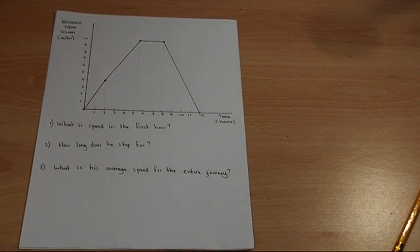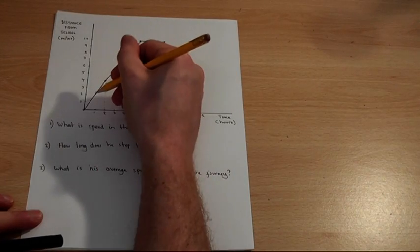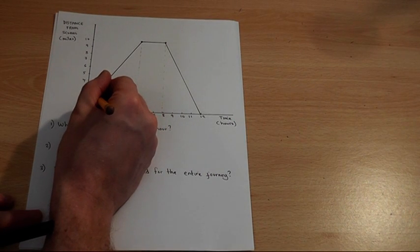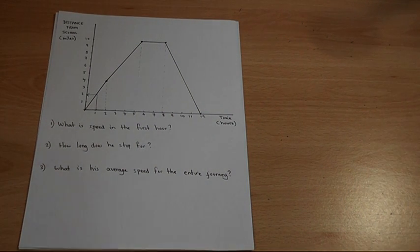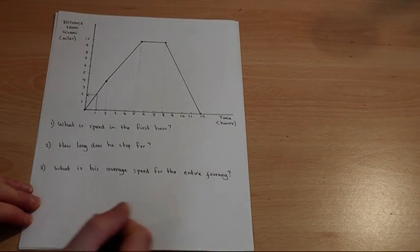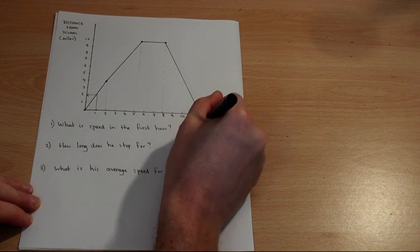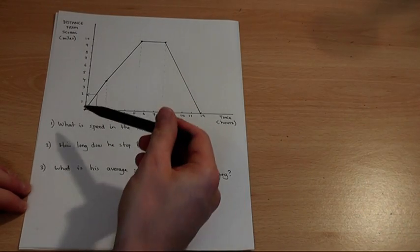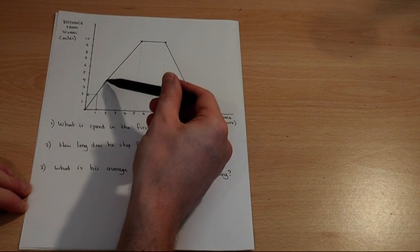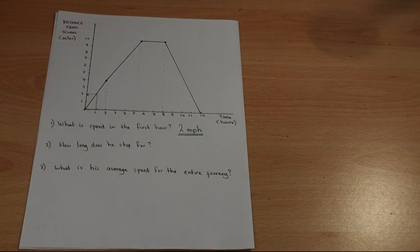Question one says, what is the speed in the first hour? Well if we look at the graph we can see how in the first hour this person travels two miles. So he travels two miles in one hour so his speed is two miles per hour. As an aside we can see how his speed is constant here but then actually decreases. He slows down because the gradient of that line is less steep.